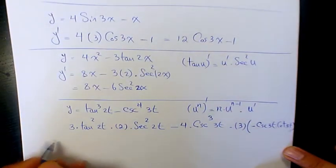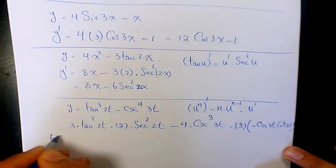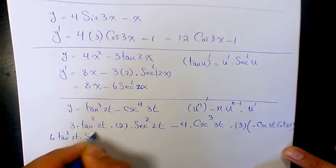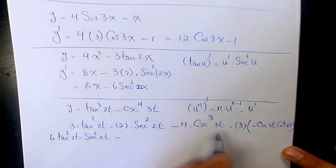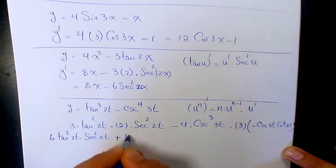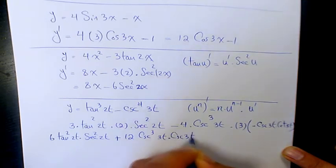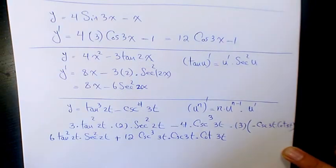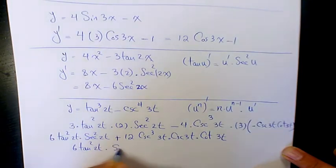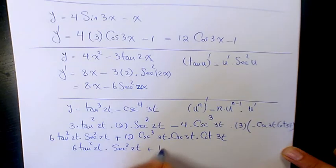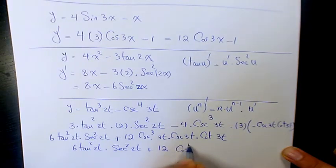When you simplify, the first term gives 6 tan squared 2t times secant squared 2t. The minus and the negative from the cosecant derivative cancel to give plus. 4 times 3 is 12, so the second term becomes 12 cosecant cubed 3t times cosecant 3t times cotangent 3t, which simplifies to 12 cosecant to the power of 4 of 3t times cotangent 3t. Final answer: 6 tan squared 2t times secant squared 2t plus 12 cosecant to the power of 4 of 3t times cotangent 3t.